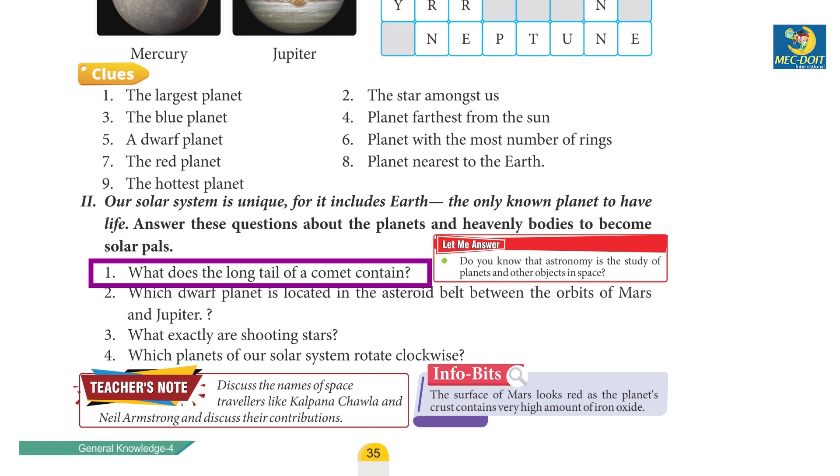1. What does the long tail of a comet contain? Answer: Gas and dust.